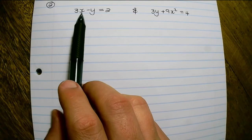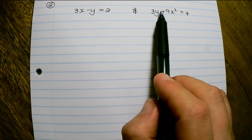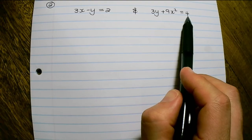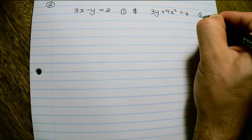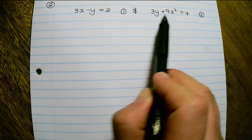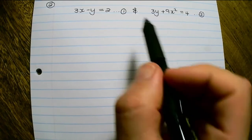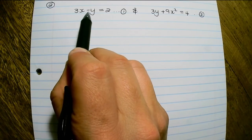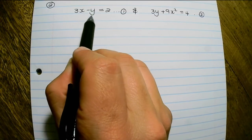In our next example we have the following two equations: 3x minus y equals 2, and 3y plus 9x squared equals 4. So we have equation 1 and equation 2. I can see I cannot simply substitute one of the variables into the other equation. So what I would need to do is rewrite — I can see from 3x minus y equals 2 that it will be easy to isolate the y.